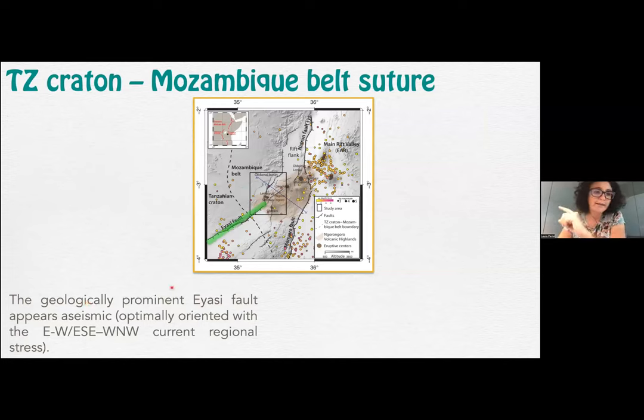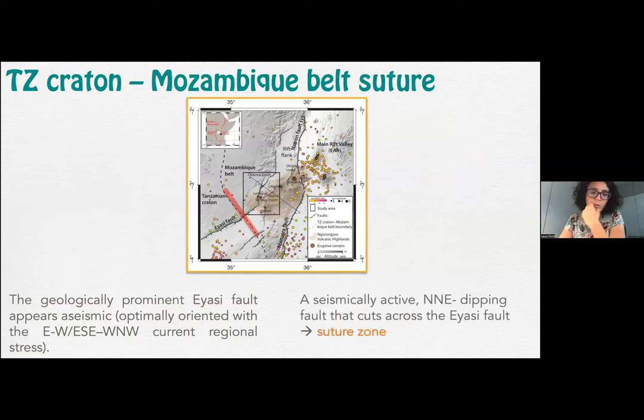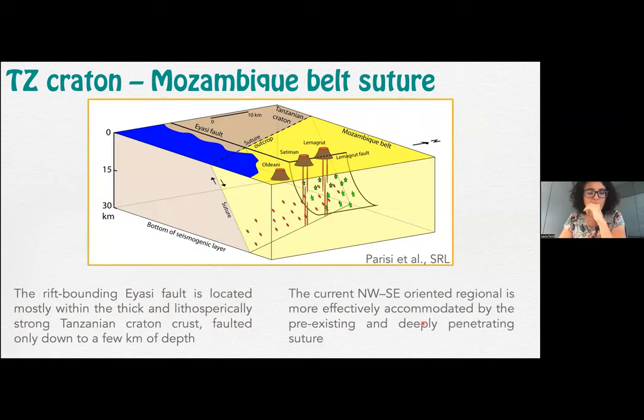It's interesting to note that the prominent Yasi fault appears aseismic, not just from our experiment but even from previous experiments. Conversely, this other structure which is almost perpendicular looks quite active. To explain this, the Yasi fault is mostly contained within the Tanzania Craton, which is quite strong and thick. The Yasi fault is known to go at not more than two kilometers depth. To break this fault needs quite a bit of work. Instead, this other feature, the suture zone, although not optimally oriented, is a pre-existing structure and also deeply penetrating. So the stress is probably easily accommodated along the suture than the Yasi fault.